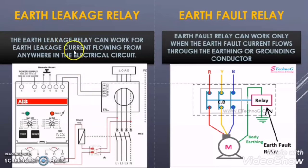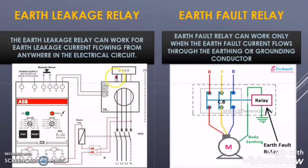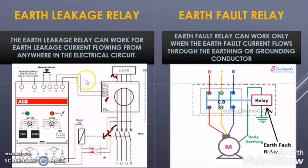The next difference concerns coverage zone. In the earth leakage relay, wherever the fault happens, it will trip. If a fault happens at the load side, the imbalance current is detected by the CBCT and it trips the circuit breaker. Even if the fault happens before the CBCT near the source side, the leakage current still creates an imbalance that the CBCT senses, and the earth leakage relay trips the circuit. So wherever the fault happens, the earth leakage relay always operates.